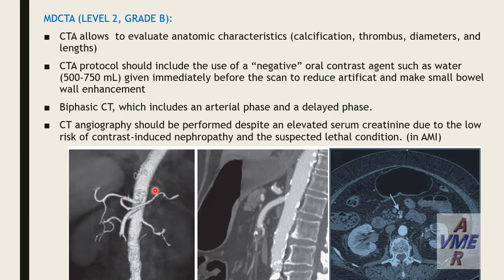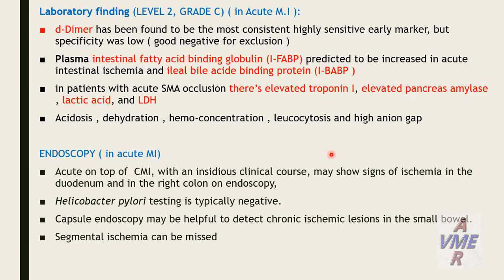This is a picture of multi-detector CT angiography showing a thrombus in the superior mesenteric artery, both in the axial cut. Regarding laboratory findings, D-dimer has been found to be the most consistently high-sensitivity early marker, but its specificity is low, making it a good negative predictor. Plasma intestinal fatty acid-binding protein is predicted to be increased in acute mesenteric ischemia, as is ileal bile acid-binding protein. In patients with acute superior mesenteric artery occlusion, there is elevated troponin-I, elevated pancreatic amylase, lactic acid, and LDH.